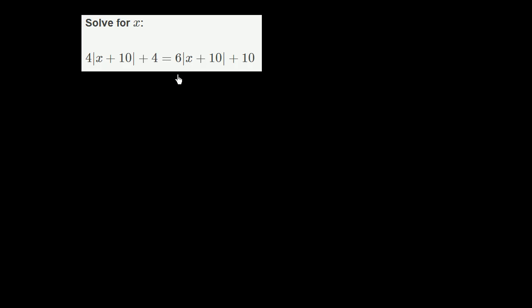At first, this looks really daunting. But the key is to just solve for this absolute value expression and then go from there. Let me just rewrite it so that the absolute value expression really jumps out. So this is 4 times the absolute value of x plus 10 plus 4 is equal to 6 times the absolute value of x plus 10 plus 10.